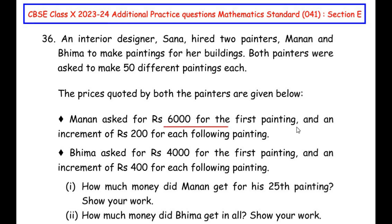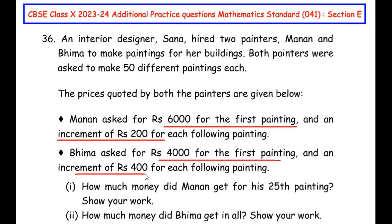The price quoted by Manan is Rs. 6000 for the first painting and for consecutive paintings he is going to charge 200 more — so 6200 for the second, 6400 for the third, and so on. Painter Bhima has asked for Rs. 4000 for the first painting with an increment of 400 for each consecutive painting — so 4000, 4400, 4800, and so on.